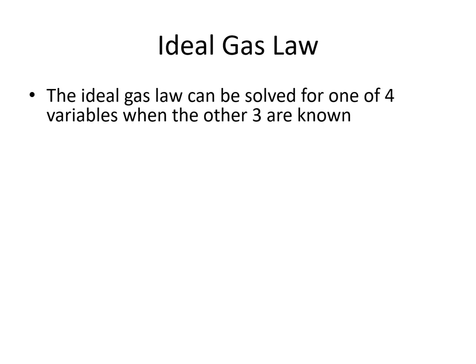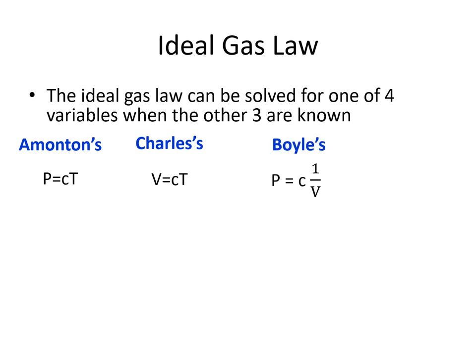We've combined our gas laws in one way based on before-and-after equations. We can also combine them in a different way based on our proportionality equations — this gives us the ideal gas law. The ideal gas law is not a before-and-after equation; it's one set of circumstances where if we know three of the variables, we can solve for the fourth. Amontons' law: P proportional to T. Charles's law: V proportional to T. Boyle's law: P proportional to 1/V. Avogadro's law: V proportional to n.